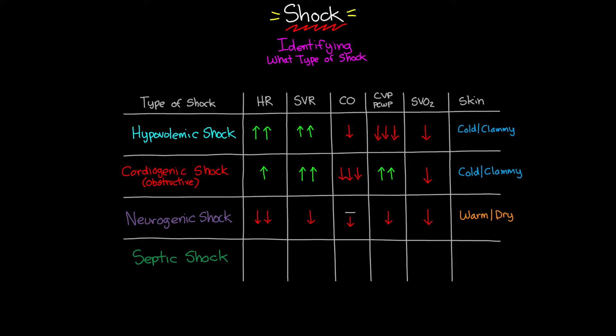With septic shock: heart rate initially increases as the body attempts to compensate, but as the shock progresses — with ongoing damage to end organs and vessels and increasing cellular edema — we may eventually see a decrease in heart rate. A hallmark of septic shock is the profound systemic inflammatory response and release of mediators, leading to a profound drop in SVR and profound hypotension.